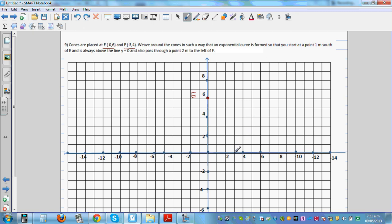This is 3 comma 4, which is F. We weave around the cones in such a way that an exponential curve is formed. You start at a point 1 meter south of E. Each square is 1 meter by 1 meter, so 1 meter to the south of E.